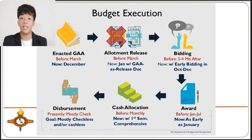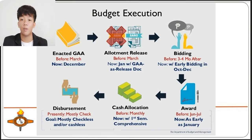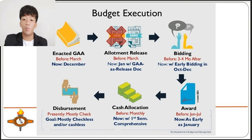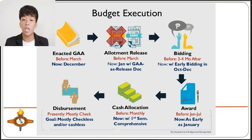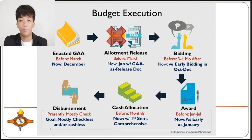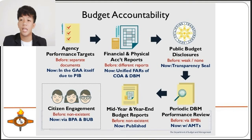Disbursement is the final step of budget execution, where government monies are actually spent. The modified disbursement scheme is mostly used, where disbursements of national government agencies chargeable against the Treasury are made through government servicing banks such as the Land Bank of the Philippines. The budget process does not end with government agencies spending public funds — each peso must be accounted for to ensure proper use, contributing to the achievement of socioeconomic goals.